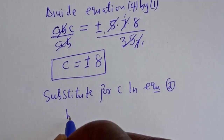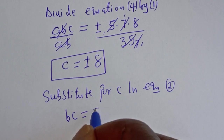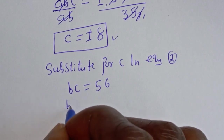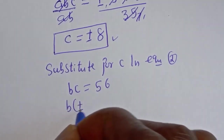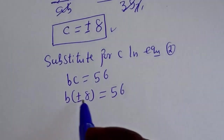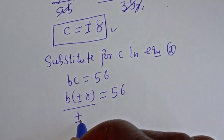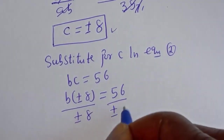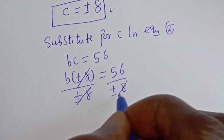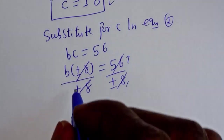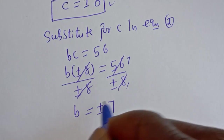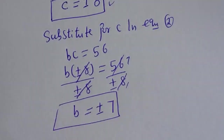Now let's substitute for C in equation 2. Equation 2 is BC = 56, and C is equal to ±8. So B multiplied by ±8 is equal to 56. Dividing both sides by ±8, the 8s cancel, and B is equal to plus or minus 7. This is the value of B.